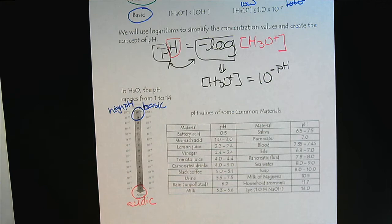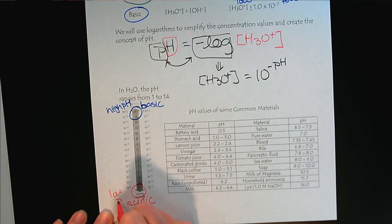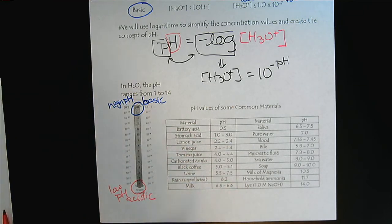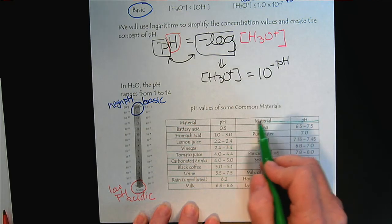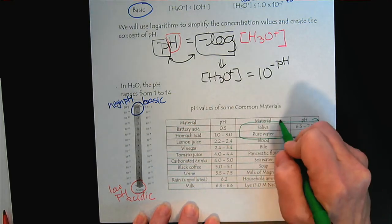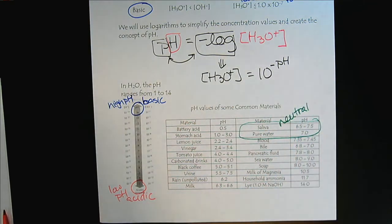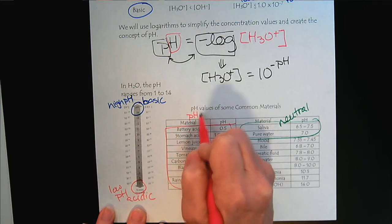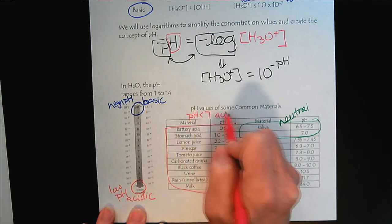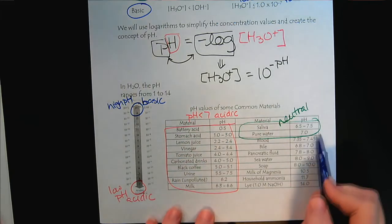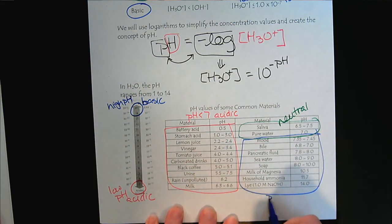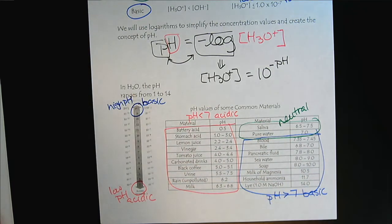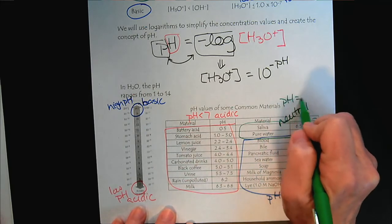And just out of general interest, anything around pH 7, we would say is in the neutral range. So anything with a pH below 7 is considered acidic. And anything with a pH above 7, we would consider basic. And pH at 7 is neutral.